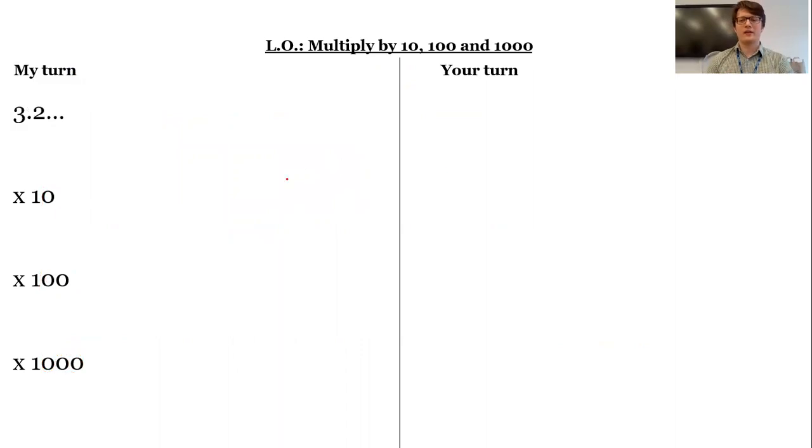What about this one then? It's very similar, but this time I've got a decimal number here. So again, I'm going to draw my place value grid. I know I'm going to be moving this way because I'm multiplying, so I'm going to put in my decimal point.